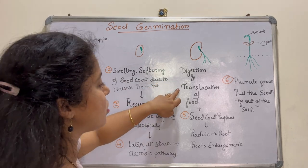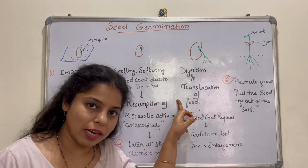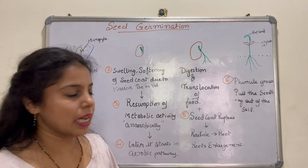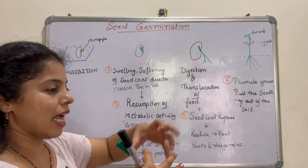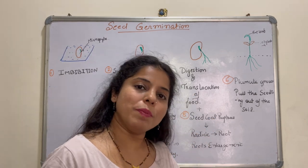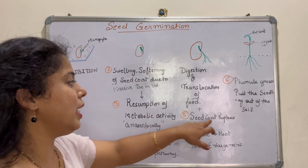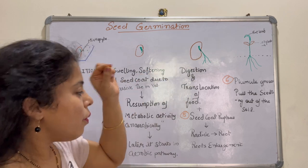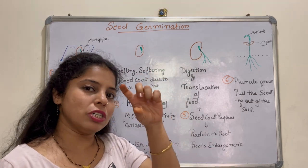Digestion and translocation of food from the endosperm or cotyledon to the growing embryo takes place. The size of the embryo increases, as the embryo is developing using food and water. The seed coat then gets ruptured.